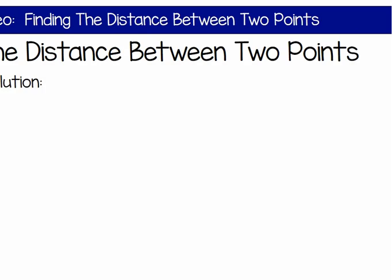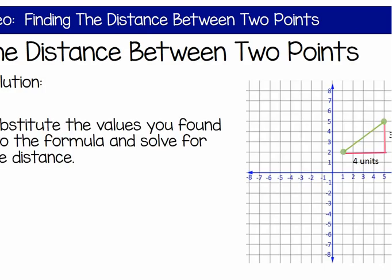From there, you want to take the square root of twenty-five, which is five. So the distance of the length would be five units.